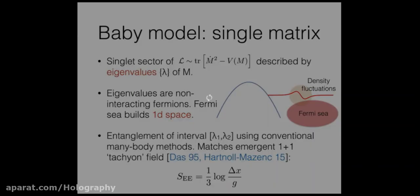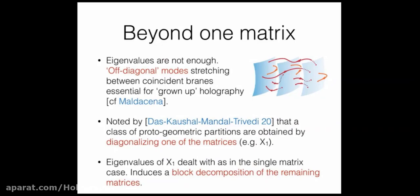This theory is really too simple — once you reduce everything to eigenvalues it's not really a matrix anymore. In real holography, like in more than one dimension, the way Maldacena told us to think is: you take a lot of branes and bring them together; the branes are like eigenvalues, but there are also strings connecting the branes, which are like the off-diagonal modes of the matrix. If you have more than one matrix you cannot diagonalize them simultaneously, so you have to deal with the off-diagonal modes.